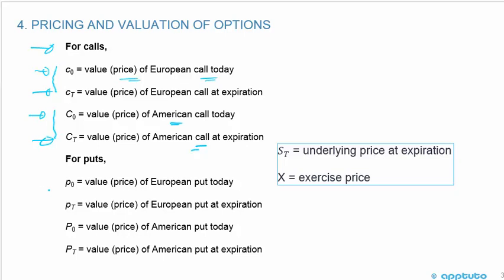For puts it is very similar. Small P₀ is the value of the European put today. Small Pₜ is the value of the European put at expiration. Big P₀ is the value of an American put today, and big Pₜ is the value of an American put at expiration. Two other symbols: Sₜ is the underlying price at expiration, and X is the exercise price.